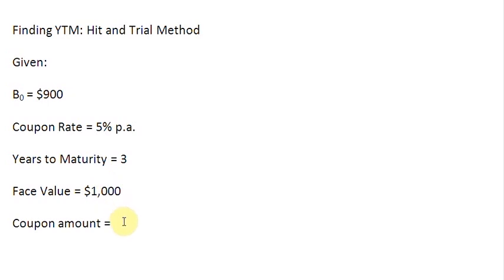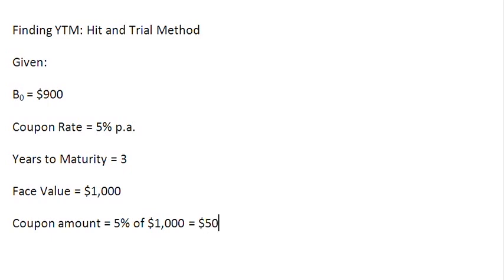The first thing we need to do is find out the coupon amount. We apply the coupon rate — which is 5% — to the face value. So we find out 5% of $1,000, and that gives us $50. So $50 is the coupon amount, which we can now use in our equation for bond valuation.